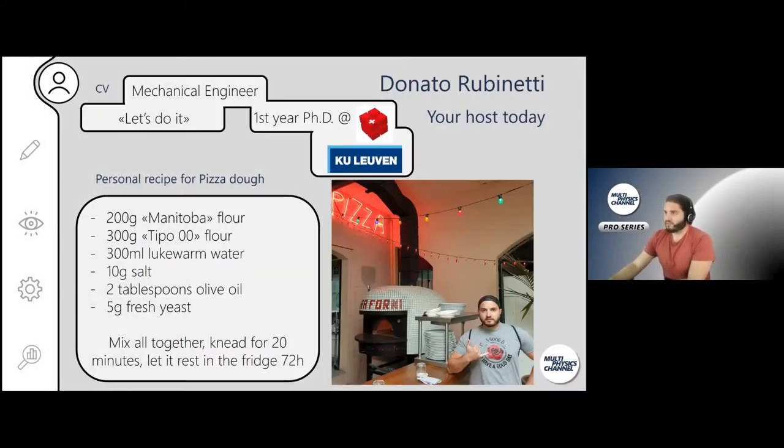So first thing about me, I'm Donato Rubinetti, I'm your favorite mechanical engineer. I'm having already the third episode on the Multiphysics Channel. And here in that box, I wrote for you as an Easter gift my personal recipe for a pizza dough. Basically you have to mix everything together and then let it rest for three days. People say 10 grams of salt and 5 grams of yeast, you cannot do that, that will kill the yeast. But just try it out, believe me. If it's going for 72 hours, the flour has enough sugar that it can grow.